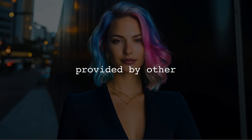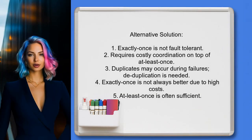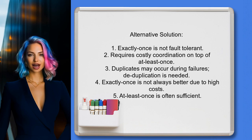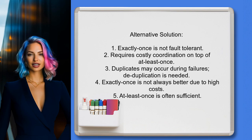Let's look at answers provided by other users. One user explains that exactly once guarantees are not fault-tolerant in large distributed systems. They emphasize that achieving exactly once delivery requires costly coordination on top of at least once mechanisms. In case of failures, duplicates may occur and the solution is to deduplicate these messages. They also point out that exactly once is not necessarily better, as it comes with high costs, while at least once is often sufficient.